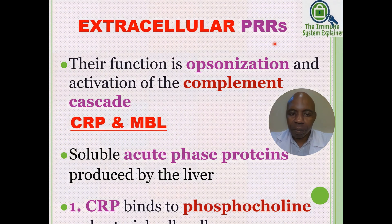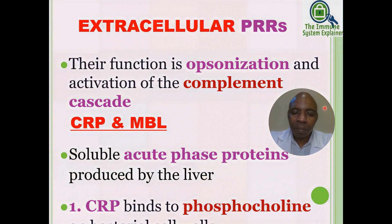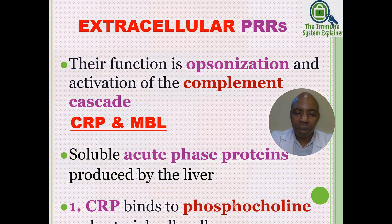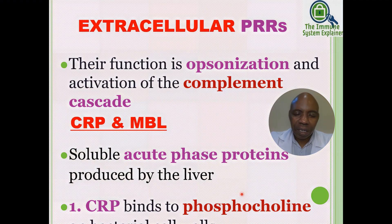The function of extracellular PRRs is opsonization and activation of the complement cascades. The two main examples are C-reactive protein (CRP) and mannose-binding lectin (MBL). These PRRs are soluble acute-phase proteins produced by the liver. C-reactive protein binds to phosphocholine, which is a structure found on bacteria.